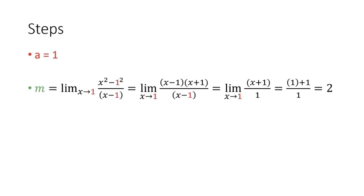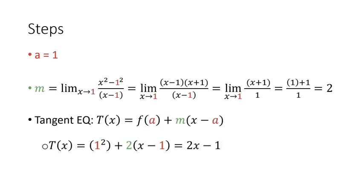First, we do some simplification, and then we plug in, and we get m equals 2. Now we just plug m into our tangent equation, shown here. This gives a tangent equation of 2x minus 1.